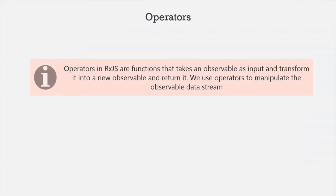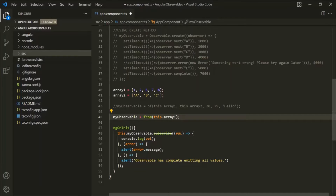Operators in RxJS are simply functions that take an observable as an input and transform it into a new observable, and then return it. We use operators to manipulate the observable data stream. Let's understand this with an example.